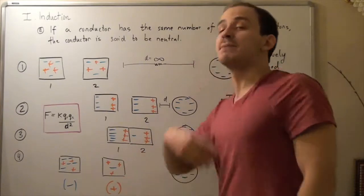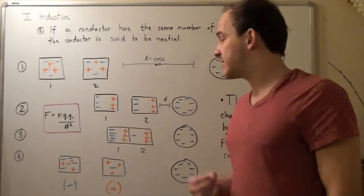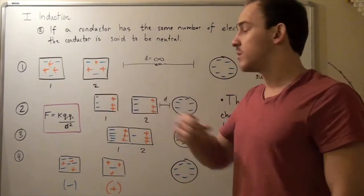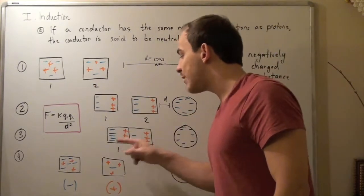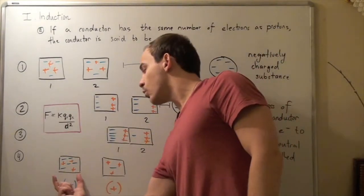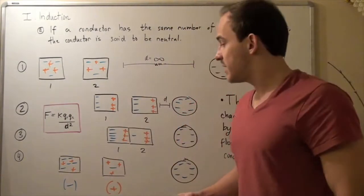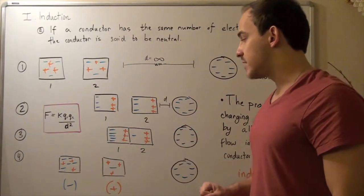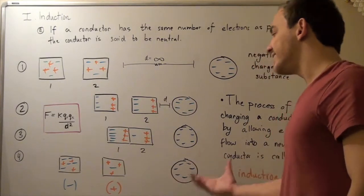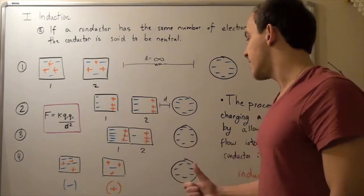Because now the number of protons is more than the number of electrons, while this guy will gain a negative charge. And this guy will become negative because he will have more electrons than protons.